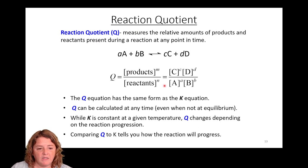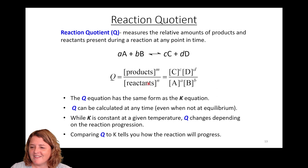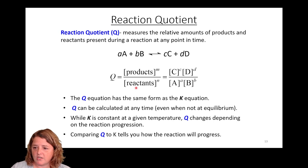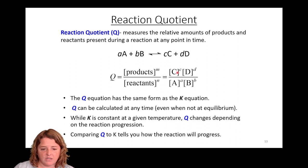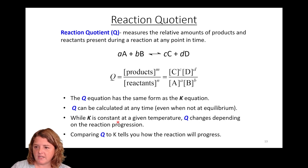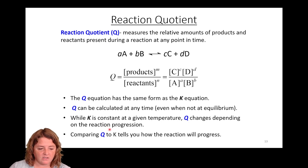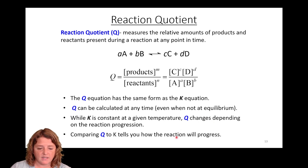Q has the same form as K — ratio of products to reactants, raising everything to its respective stoichiometric coefficient — but Q can be calculated for any point in a reaction, whether at equilibrium or not. K is constant at a given temperature; Q evolves in time if the reaction is not at equilibrium. Comparing Q to K will tell you where you are: either at equilibrium, or if not, what's going to happen in an effort to get there.